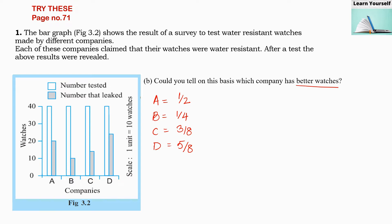We have to compare these fractions to see which is bigger and which is smaller. To compare fractions we have to make all the denominators the same. We have denominator 8 here, so we will convert the first two fractions to denominator 8. We multiply above and below by the same number, converting 1/2 to 4/8 and 1/4 to 2/8.